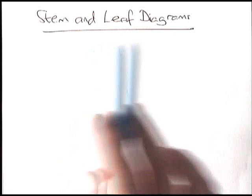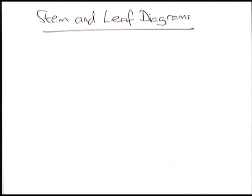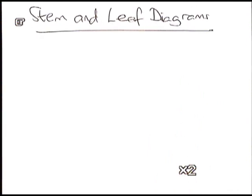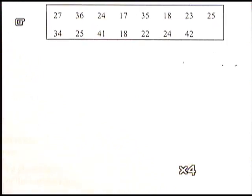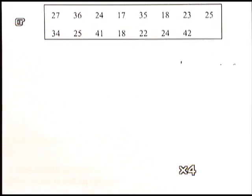In this lesson we're going to have a look at stem and leaf diagrams. Stem and leaf diagrams are used when you want to display data in a very clear way — it's just a different way of writing the data down so you can see exactly what's going on at a very quick glance. If we have a look at some data here, it's a set of numbers representing the marks a group of 15 people got in a test.